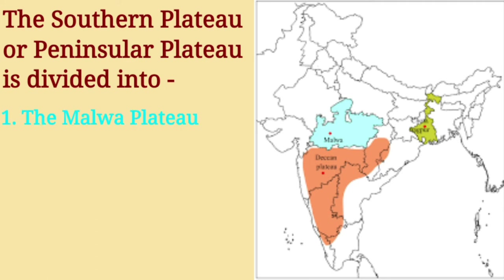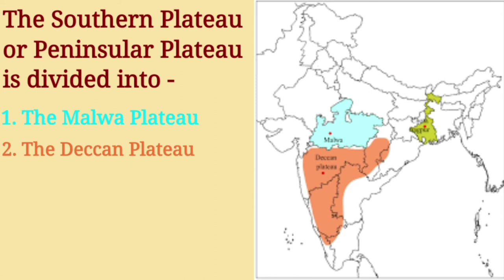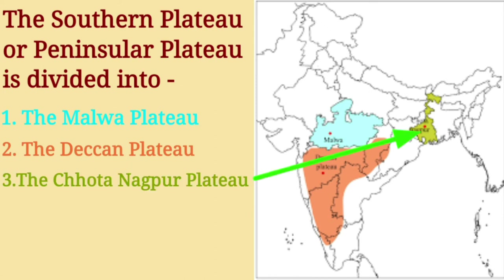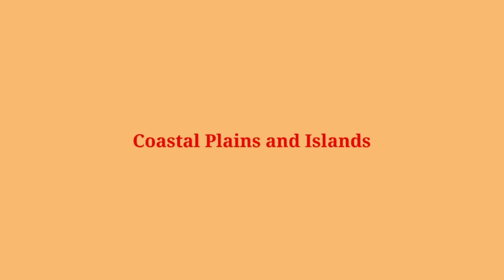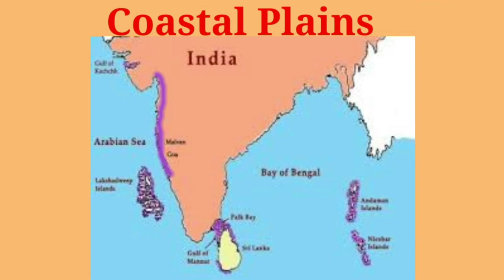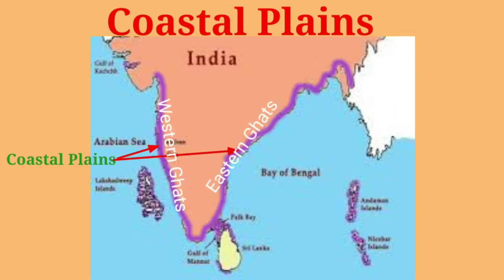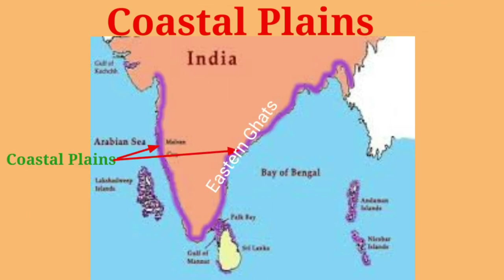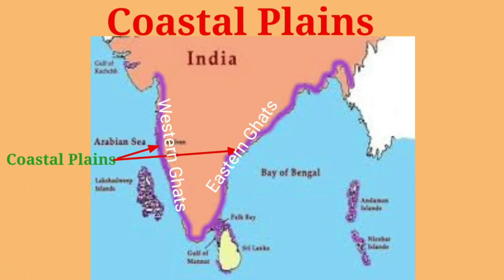The three parts are the Malwa Plateau, the Deccan Plateau, and the Chota Nagpur Plateau. Coastal plains are located to the west of the Western Ghats and to the east of the Eastern Ghats.